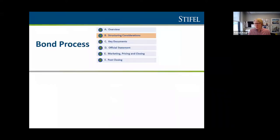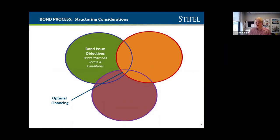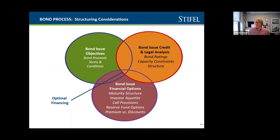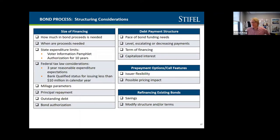When thinking about structuring the issue, there are really three considerations: bond proceeds and the terms and conditions around issuance; credit and legal analysis; and financial options. Our goal is to take all those considerations and develop the optimal financing plan. On the structuring side, considerations include the size of the financing, when the proceeds are needed, millage parameters, and what the principal repayment looks like.